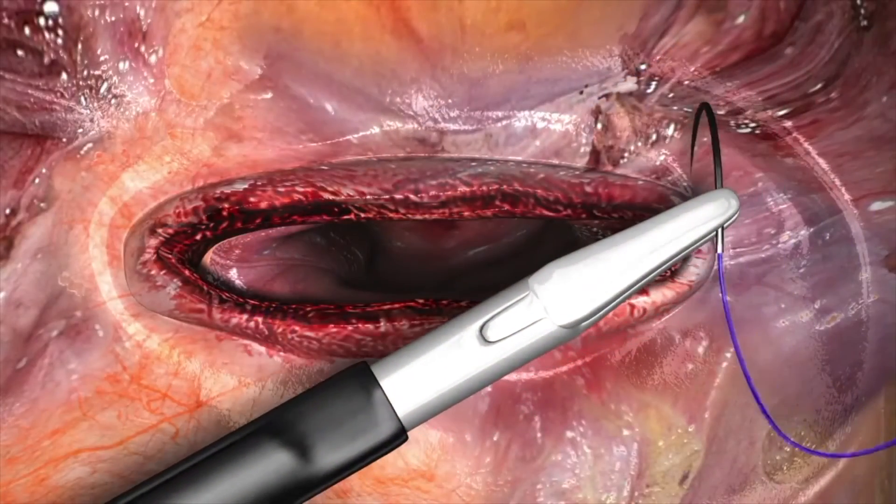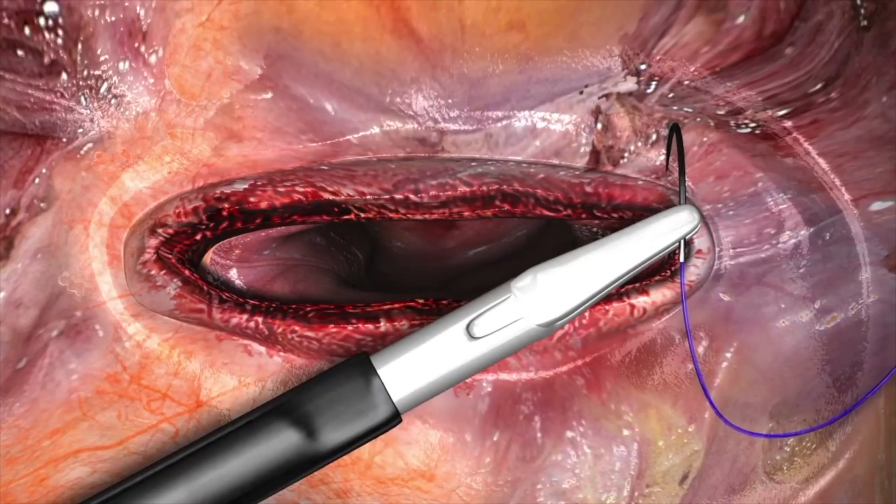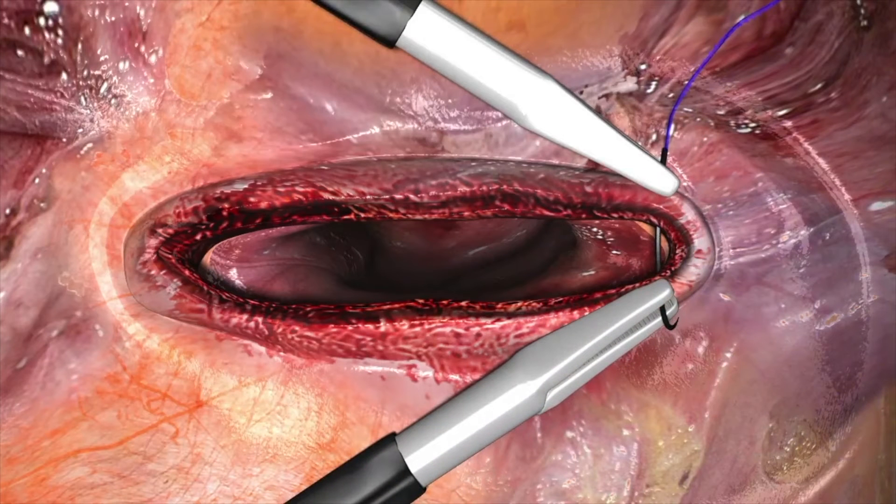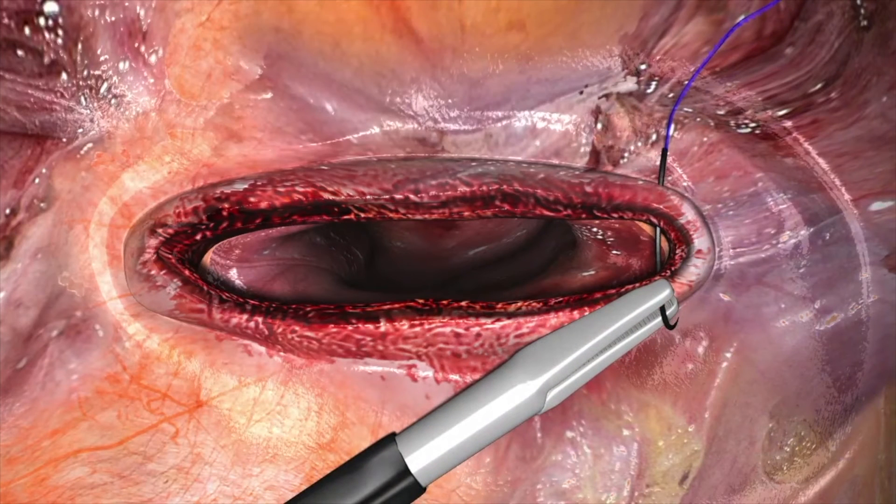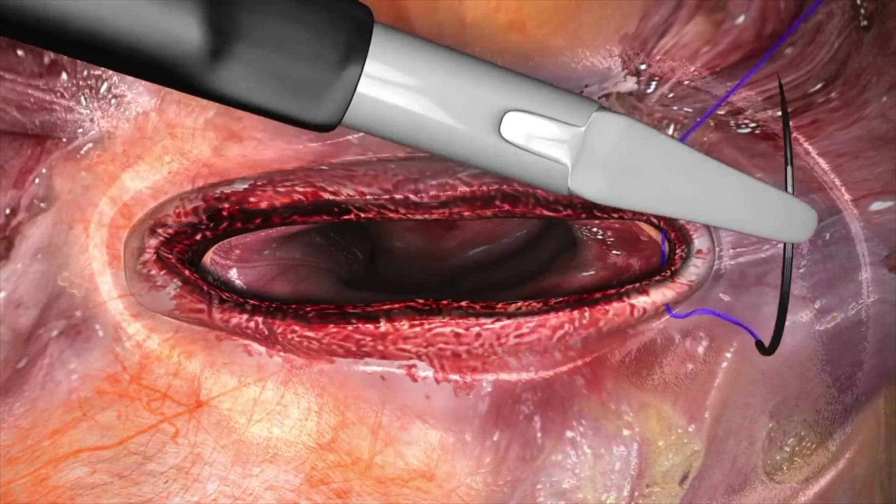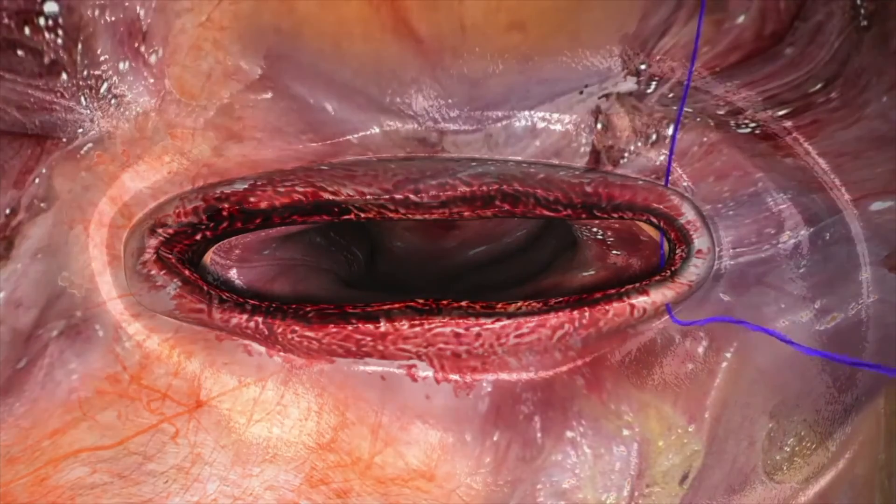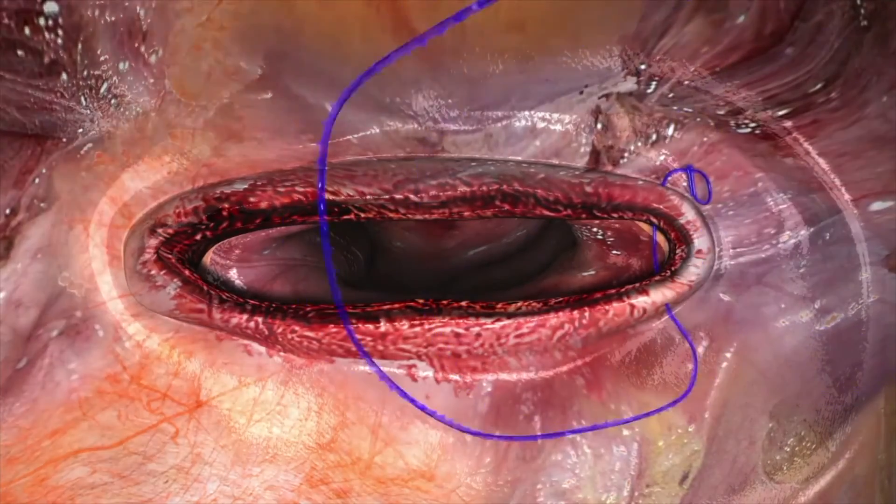Grasp the needle and take the first pass through the tissue, and then slide the fixation loop over the needle.